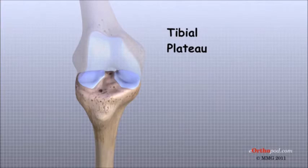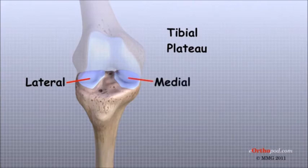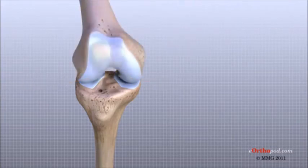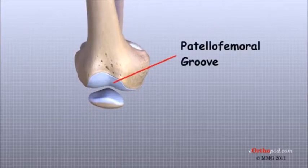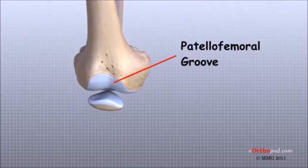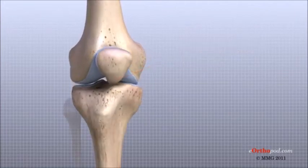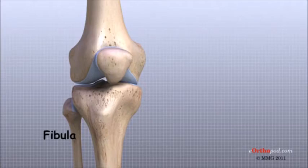The outside half, farthest away from the other knee, is called the lateral tibial plateau. The inside half, closest to the other knee, is called the medial tibial plateau. The patella glides through a special groove formed by the two femoral condyles called the patellofemoral groove. The smaller bone of the lower leg, the fibula, never really enters the knee joint. It does have a small joint that connects it to the side of the tibia, and this joint normally moves very little.